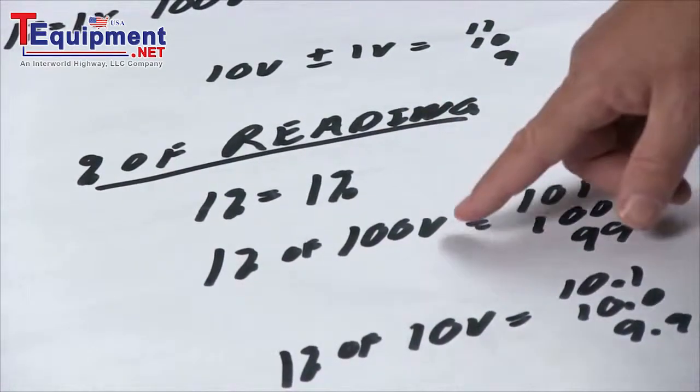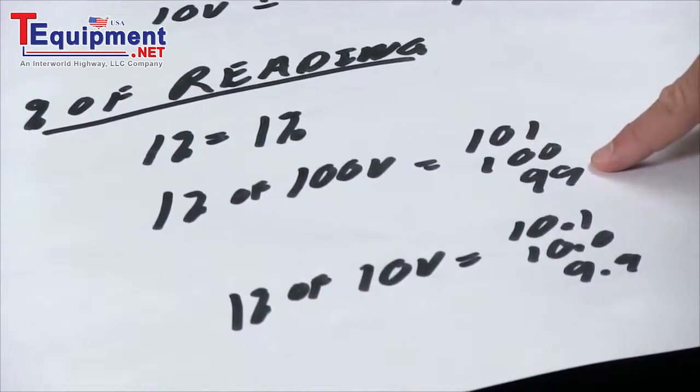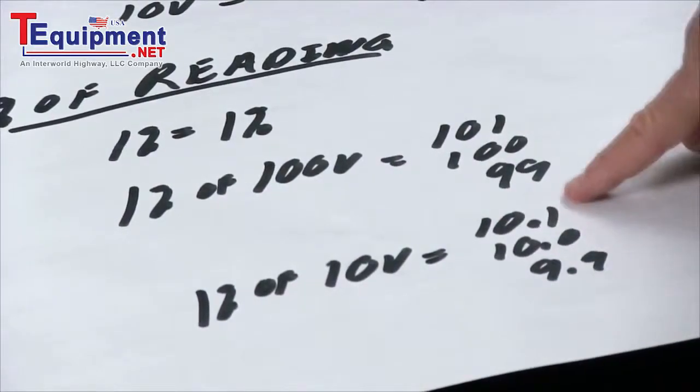So here, one percent of a hundred volts is still that plus or minus one volt. One percent of ten volts is plus or minus a tenth of a volt.